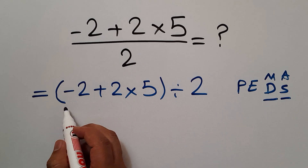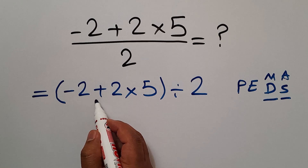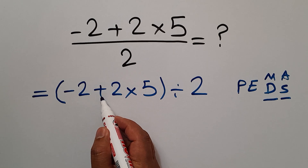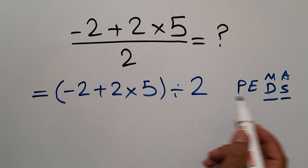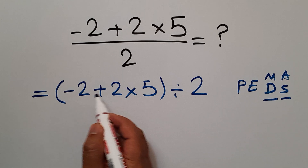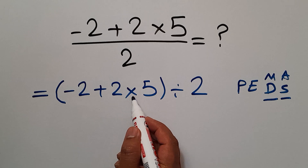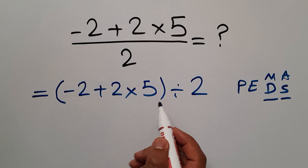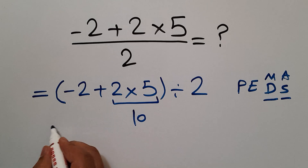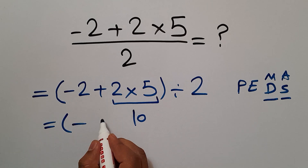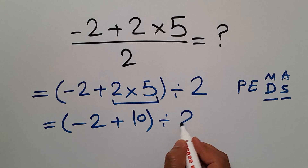So here, first we have to do these parentheses. Inside these parentheses, we have one addition and one multiplication. In PEMDAS, multiplication comes before addition. So first we have to do this multiplication: 2 times 5 gives us 10. So we have parentheses: negative 2 plus 10, divided by 2.